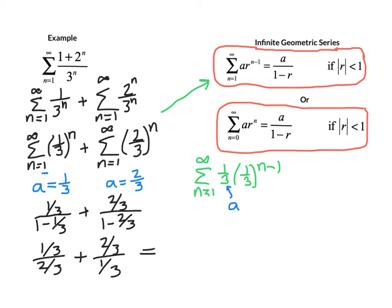This shows that the sum of 1 third to the nth power, starting at n equals 1, is equal to 1 half. And the sum of 2 thirds to the nth power, beginning at 1, is equal to 2. We add those together to get our final sum for our series, which is 5 halves.